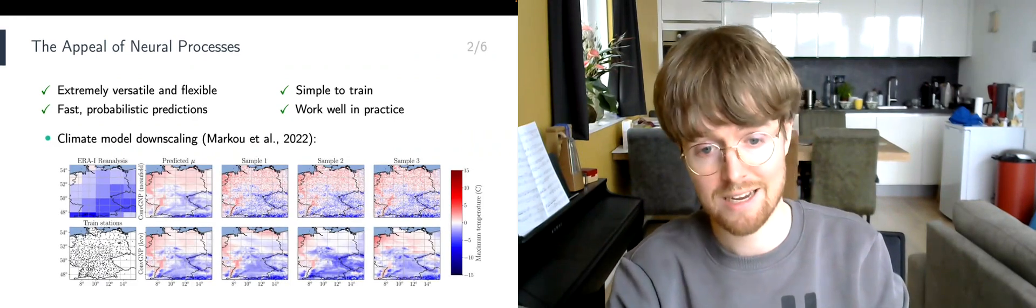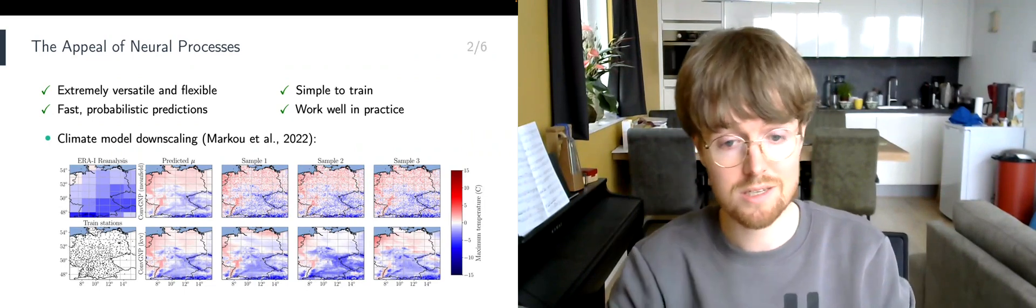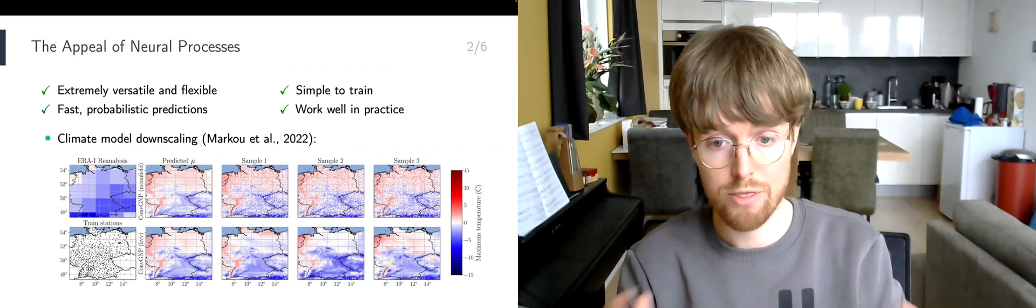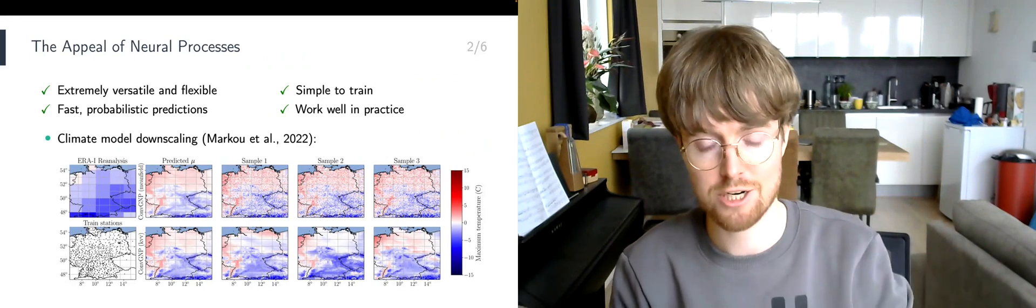One particularly exciting application of neural processes is climate science. The slide shows an example called downscaling, where the neural process attempts to refine coarse-grained outputs of climate simulators into fine-grained predictions.